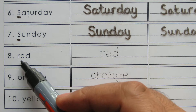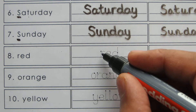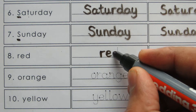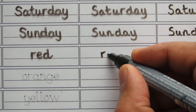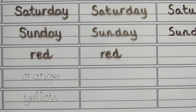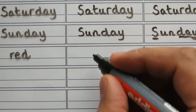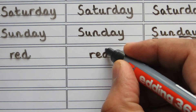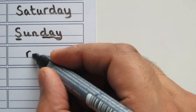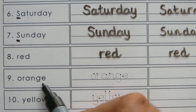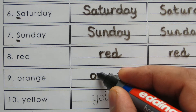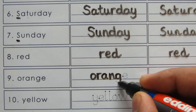The eighth word on this sheet is Red. R-E-D, Red. So let's start: R-E-D, Red. On to the next box: Red, R-E-D, Red. On to the third box: Red. R-E-D, Red. On to the last box without looking: Red. R-E-D, Red.